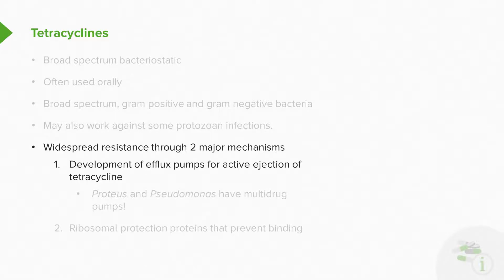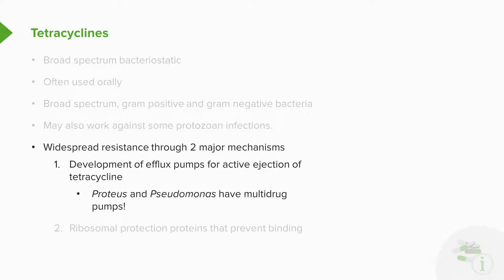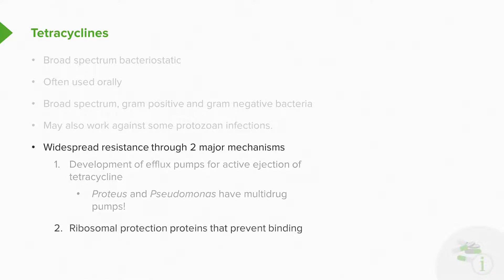There is widespread resistance through two major mechanisms. The first is through the development of an efflux pump, and that's often seen in Proteus and Pseudomonas species. Proteus and Pseudomonas are quite interesting because they have multi-drug pumps that will eject a whole host of different medications. The second mechanism of resistance is through ribosomal protection proteins that actually prevent binding — almost like a little shield around the ribosome.